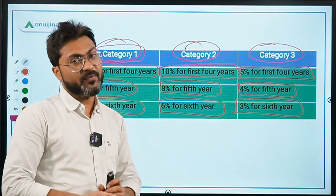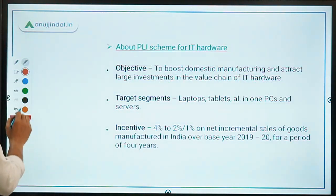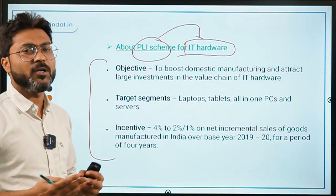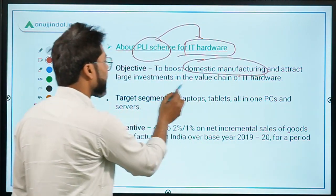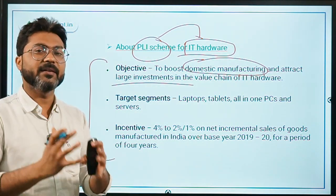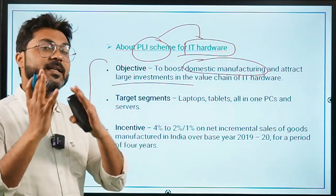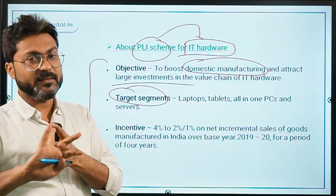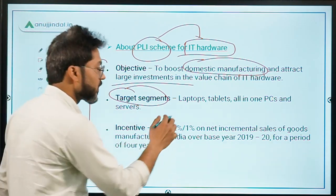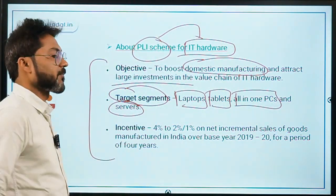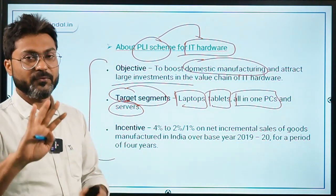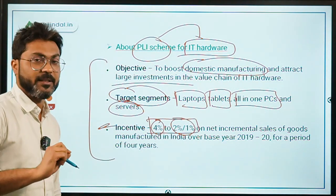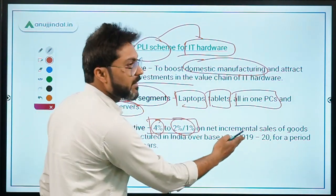Now the PLI scheme for IT hardware has also been launched with the same objective — to boost domestic manufacturing and attract investment in the IT hardware value chain. There are four targeted segments under this scheme: laptops, tablets, all-in-one PCs, and servers. The incentive ranges from 4% to 2% or 1% on net incremental sales for a period of four years.